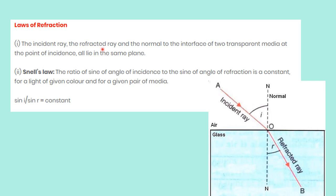First law: the incident ray, the refracted ray, and the normal to the interface of two transparent media at the point of incidence all lie in the same plane. The first law states that the incident ray, refracted ray, and normal drawn at the plane of the two surfaces all lie on the same plane.